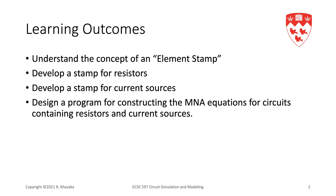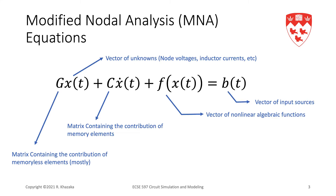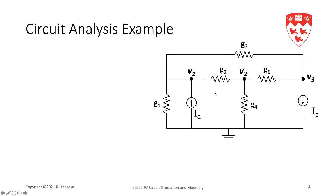We're going to start with an example, but first let me remind you of the general form of the MNA equations: GX + CX-dot + F(X) = B. That's what we're going to develop for a circuit that contains resistors and current sources.